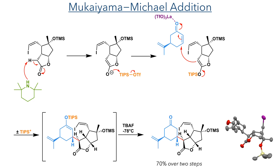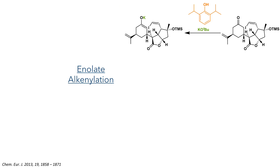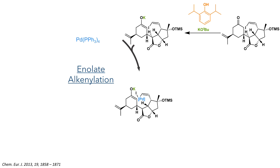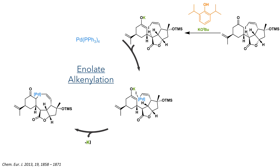This compound could be crystallized, and the X-ray crystal structure confirmed the stereochemistry. Taking this forward, it was then subject to an enolate alkynylation. The position alpha to the ketone is first deprotonated by a solution of potassium tert-butoxide and diisopropylphenol. Palladium then undergoes oxidative addition into the carbon-iodine bond, where it then reacts intramolecularly with the enolate. A reductive elimination then occurs to regenerate palladium(0) and yield the target seven-membered ring.